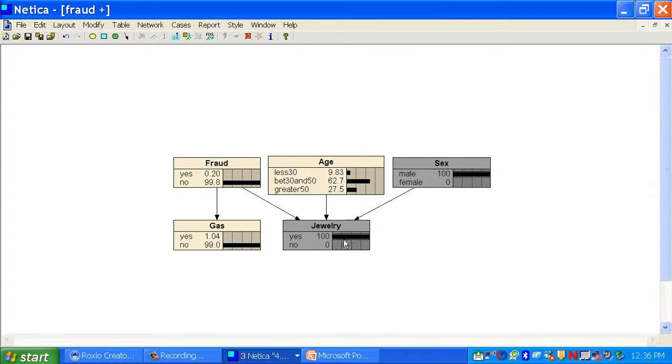Why? Well, not because sex has any causal effect on fraud. But men are less likely to buy jewelry, which makes it more likely that it's being used fraudulently. So once you instantiate an effect of two causes, it renders the causes probabilistically dependent.